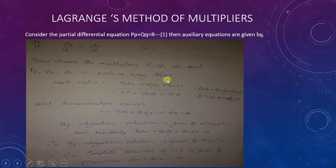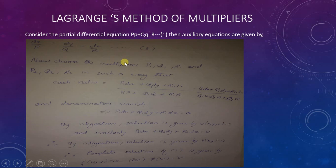Lagrange's method of multipliers. Consider the partial differential equation capital P times p plus capital Q times q is equal to R, which is equation 1. The auxiliary equations are given by dx over capital P equals dy over capital Q equals dz over capital R, which is equation 2.